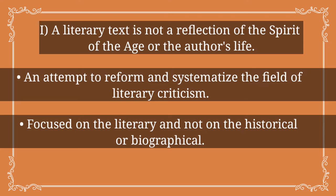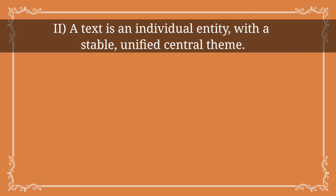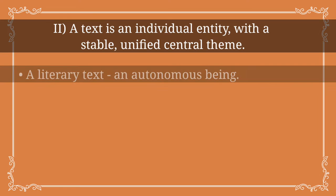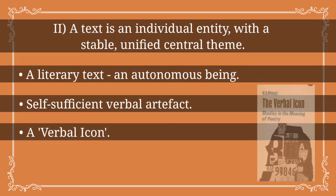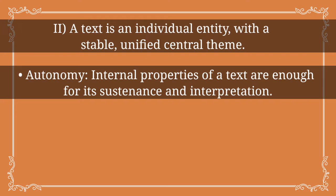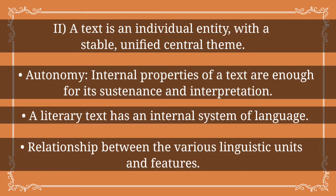New Criticism was an attempt to reform and systematize literary criticism to make it more focused on the literary rather than the historical or biographical. But if literature was not the expression of the spirit of the age or the author's intention, then what was it? According to New Criticism, a text is an individual entity with a stable, unified, central theme. The New Critics argued that a literary text is an autonomous being — a self-sufficient verbal artifact, or what W.K. Wimsatt calls a verbal icon.